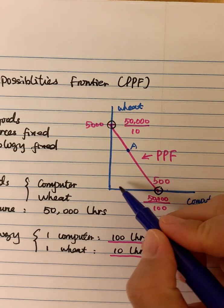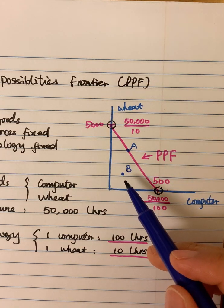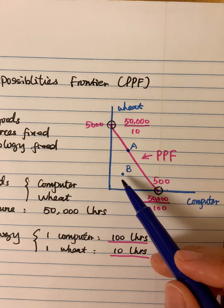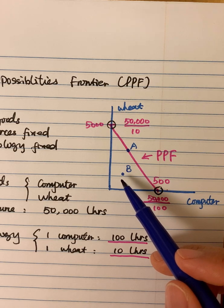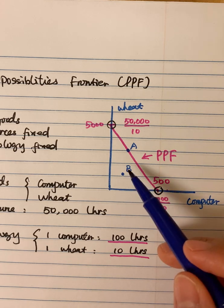Any points inside the PPF, for example point B here - this point B is possible for this economy to produce. However, this point B is not efficient because point B here cannot fully use all the resources.